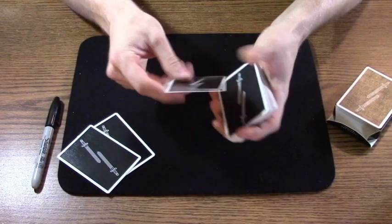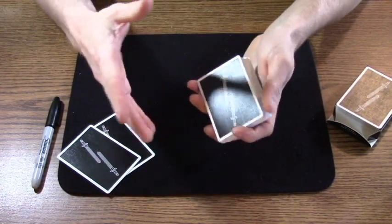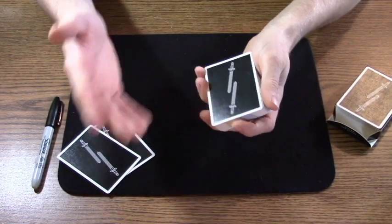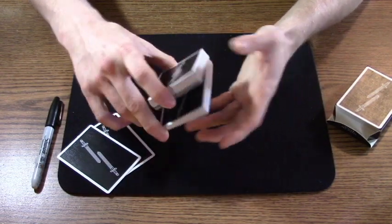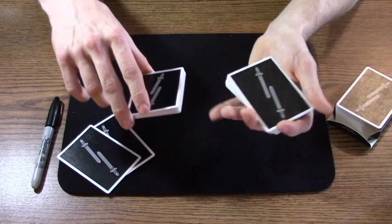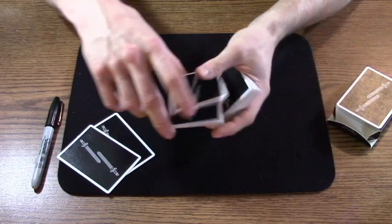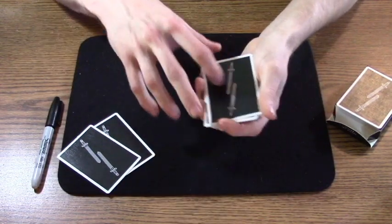Now I force the Queen of Hearts on the spectator. What I did in the performance is a fairly simple force. You guys can use whatever force you want to use. I cut about two-thirds of the deck over into my other hand, hold a pinky break at that Queen, and I throw a couple more packs on top of that.